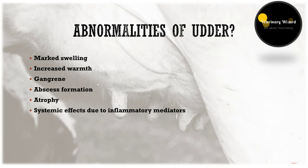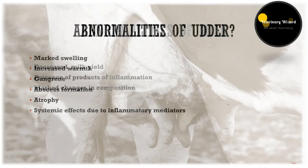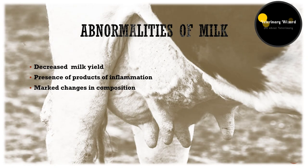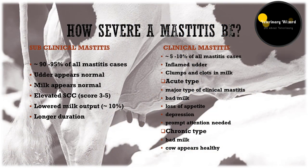If there is infection in the udder, there will be marked swelling, increased warmth, gangrene, abscess formation, atrophy, and some systemic effects due to inflammatory mediators. As the udder is affected, its effects can also be seen in milk: production will be decreased, there will be products of inflammation present in milk, and the composition of milk will also be changed.